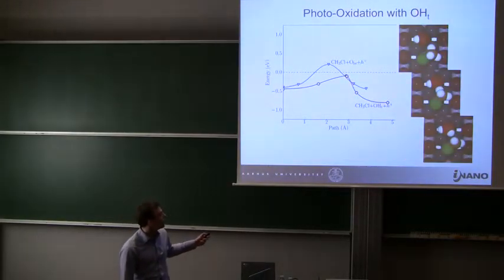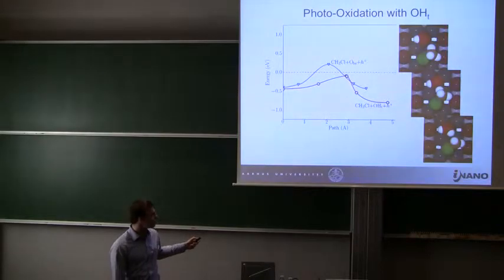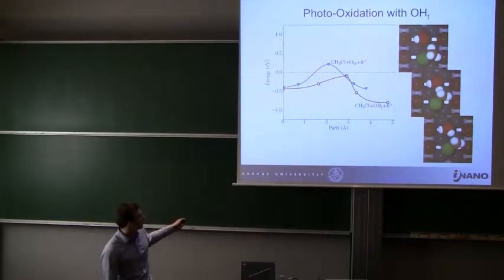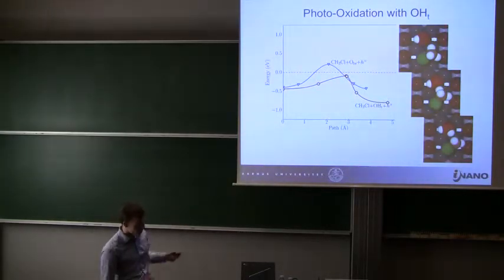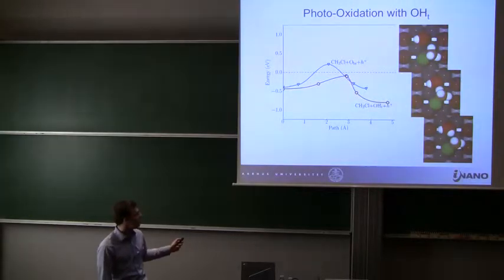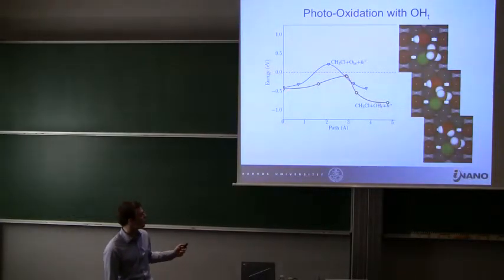First, with the OH group in the trough, again here the transition state, and here we have produced water and the radical. We see now that the barrier is 0.35 eV, which is just below the binding energy of the molecule, which means that this reaction can actually happen at some temperature range without the molecule desorbing from the surface.